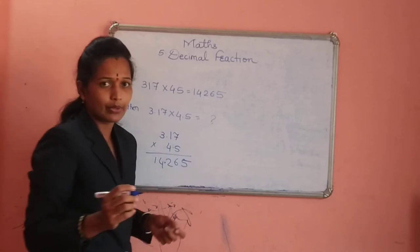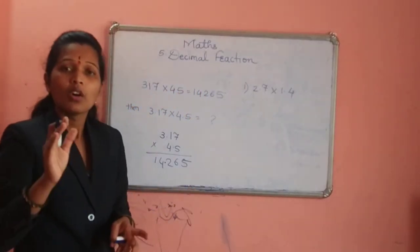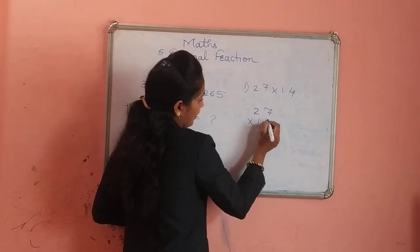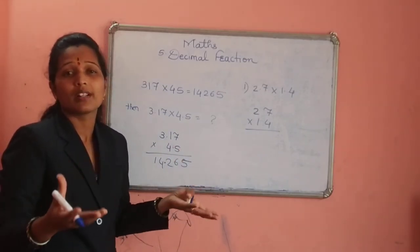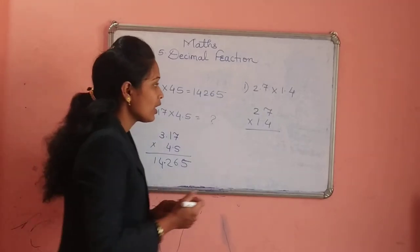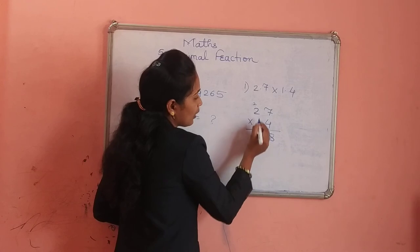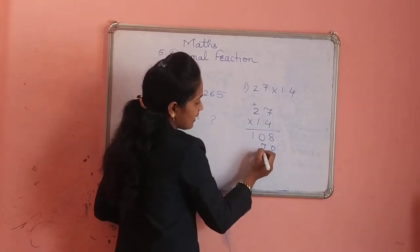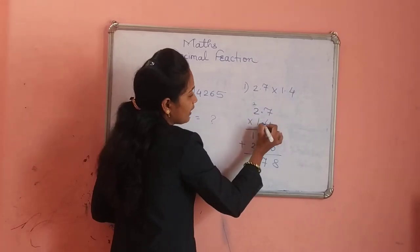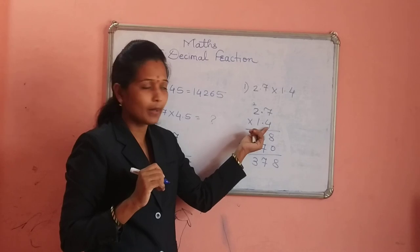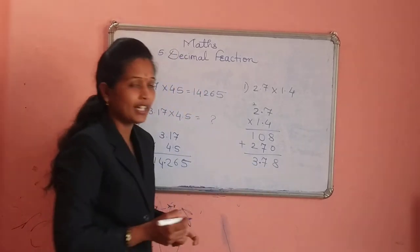By the same way, solve question 2 and question 3. I am going to take only the first example of question 3: 2.7 multiplied by 1.4. For some time, remove the decimal point and do the multiplication. 4 times 7 is 28, carry 2; 4 times 2 is 8 plus 2 is 10. Write 0, then 1 times 7 is 7, 1 times 2 is 2, giving 270. Adding: 8, 7, 3 — so 378. After 1 decimal digit in each number, 1 plus 1 is 2 digits to remove: our answer is 3.78.